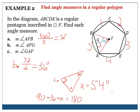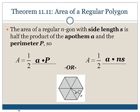Theorem 11.11: the area of a regular n-gon with side length s is half the product of the apothem a and the perimeter P. We have two equivalent formulas: A = ½ × a × P, where a is the apothem — the line creating the right angle — and P is the perimeter. Equivalently, A = ½ × a × n × s, where n is the number of sides and s is the side length, since n × s equals the perimeter.